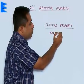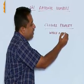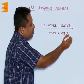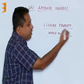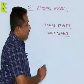If you look at whole numbers, we have defined them as numbers starting from 0 and going up to positive infinity. Now let us look at the closure property, starting with addition.